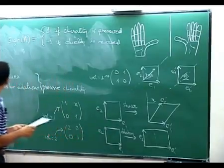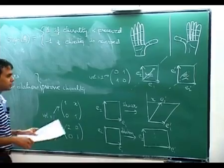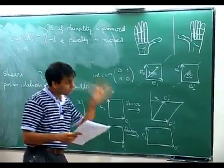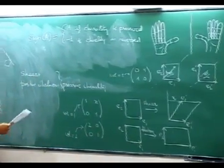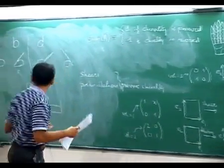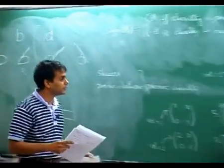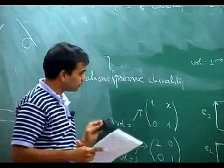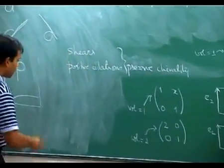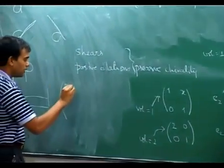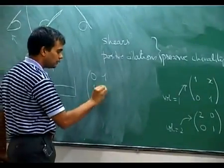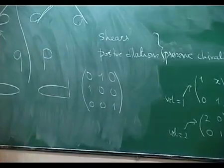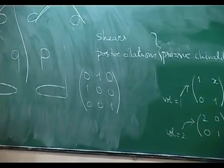Now we are ready to see why this geometric definition matches all other notions of determinant. But first let me talk a little more about reflections in higher dimensions. Let us look at the 3D matrix that has 0,1 in the first row, 1,0 in the second row, and 0,0,1 in the third row.